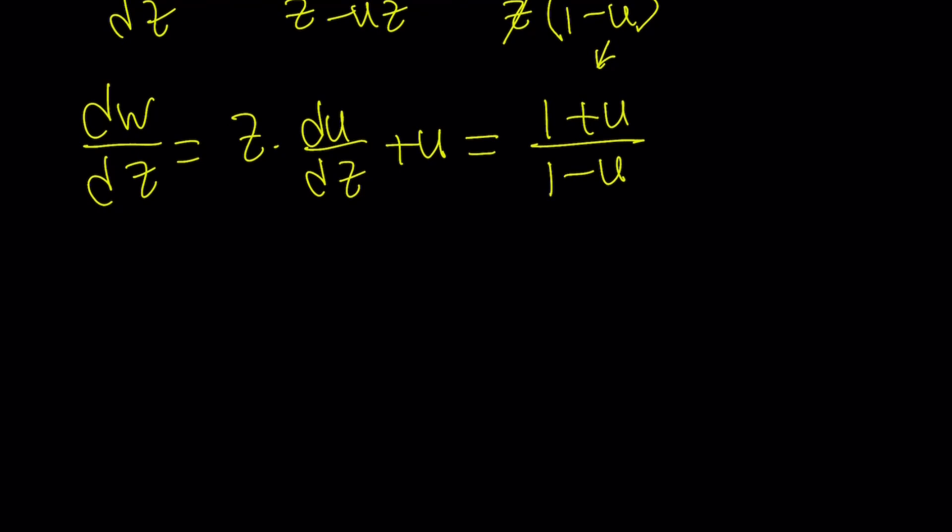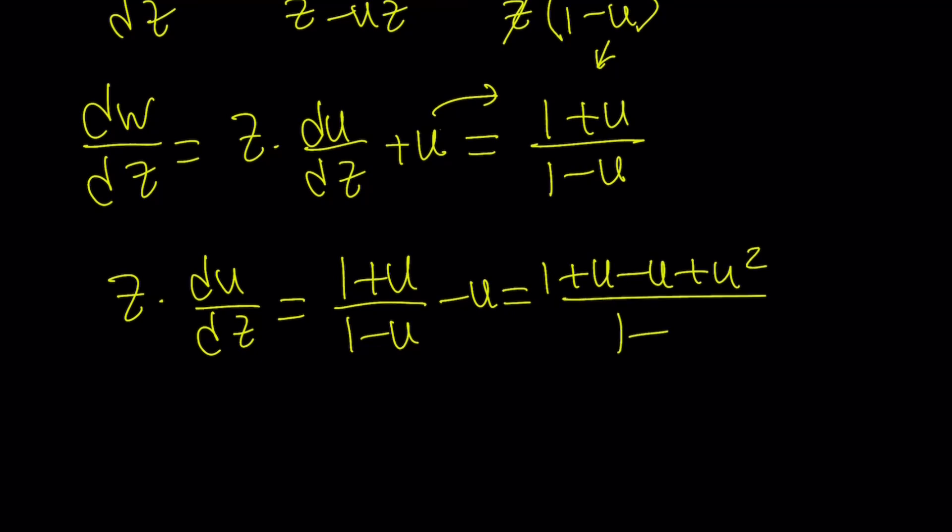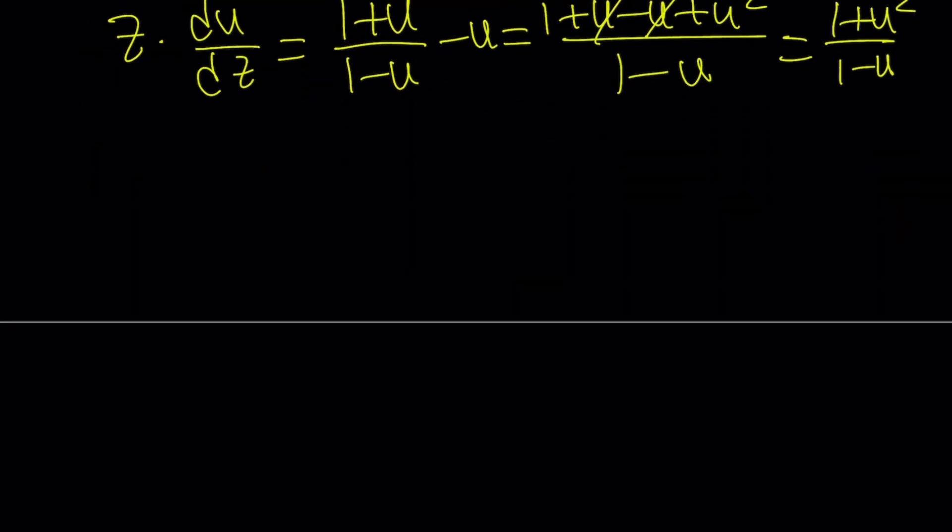Now is the time to replace dw over dz with this expression right here. Let's go ahead and do it. So, dw over dz is equal to z times du over dz plus u, and that is equal to 1 plus u over 1 minus u from here. This is what we were trying to get. Now, I have a u here. That kind of bugs me. Let me clean it up. So, we have a u here. Let's go ahead and transfer it to the other side so that we can get a nicer expression.